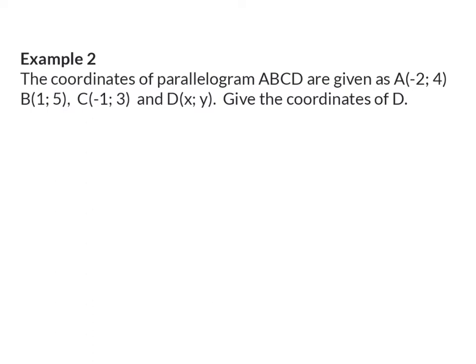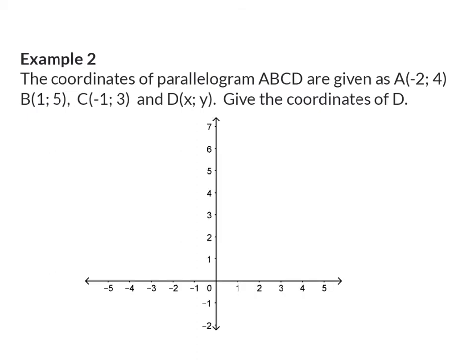Example 2. The coordinates of parallelogram ABCD are given as A(minus 2, 4), B(1, 5), C(minus 1, 3), and D(x, y). Give the coordinates of D. In analytical geometry, it always helps to draw a rough sketch if one isn't given. I'll start by plotting the given coordinates on the system of axes. It's important to know that a parallelogram is always written in a specific order, so it connects from A to B, B to C, C to D, and D back to A — with D somewhere in our second quadrant.